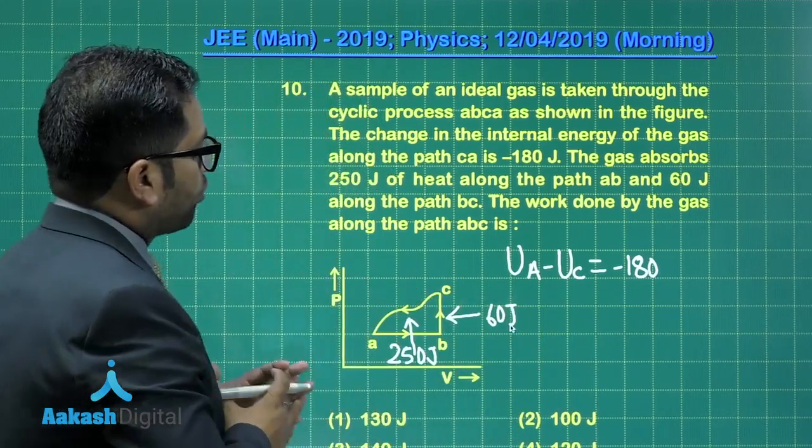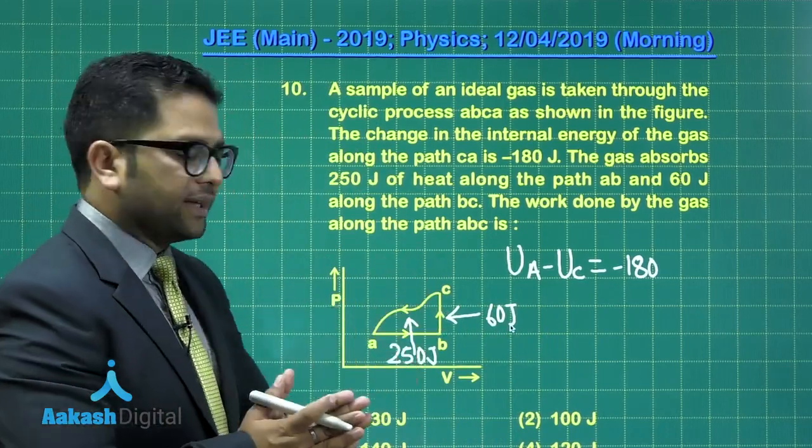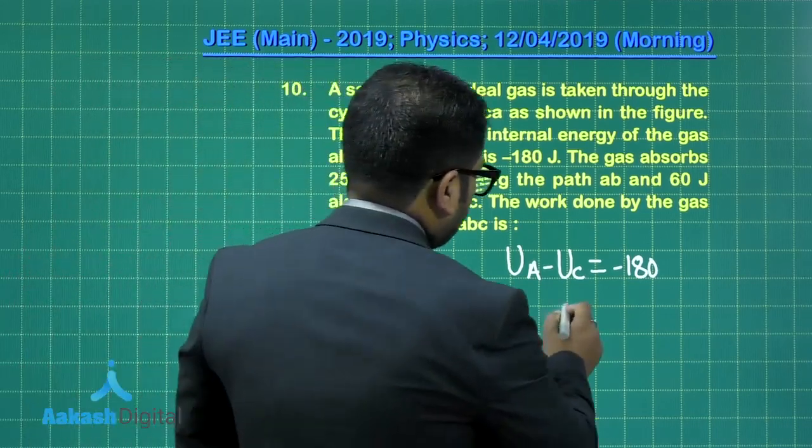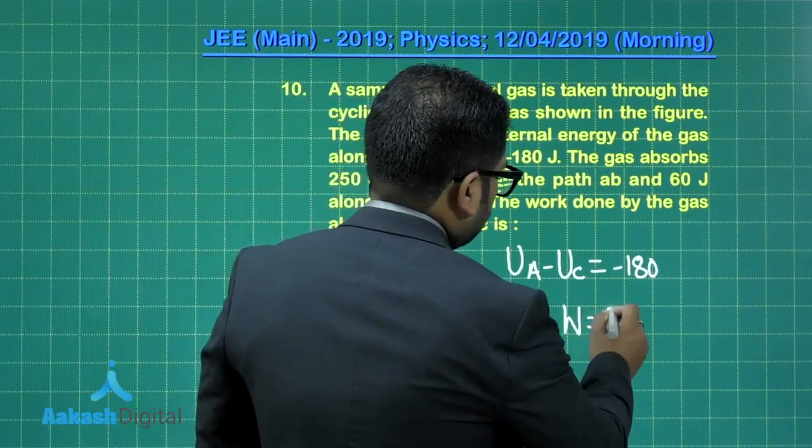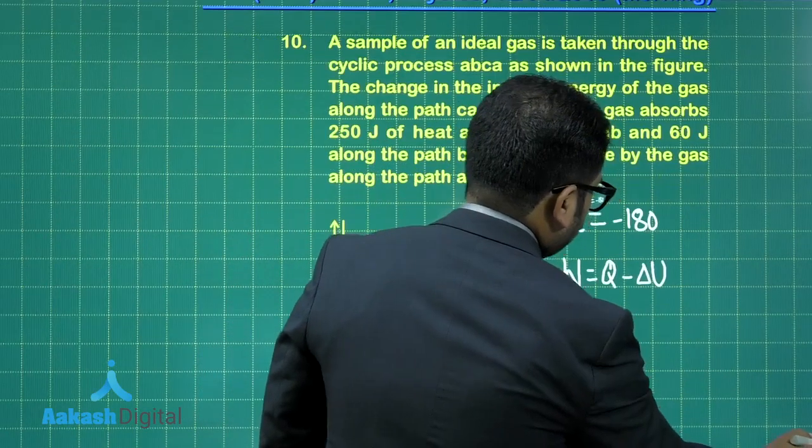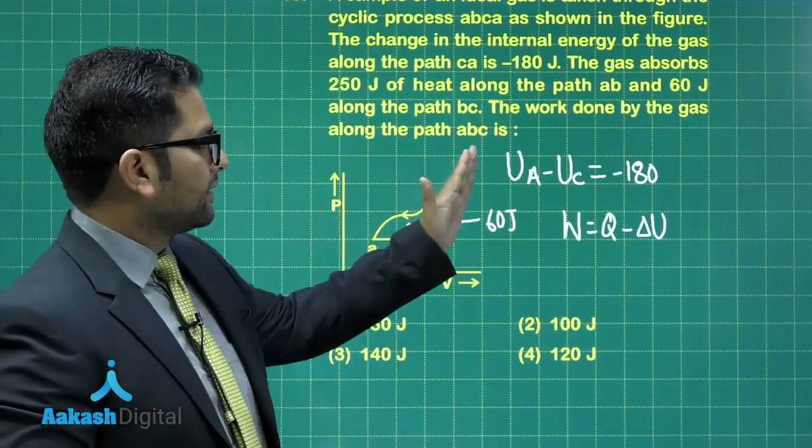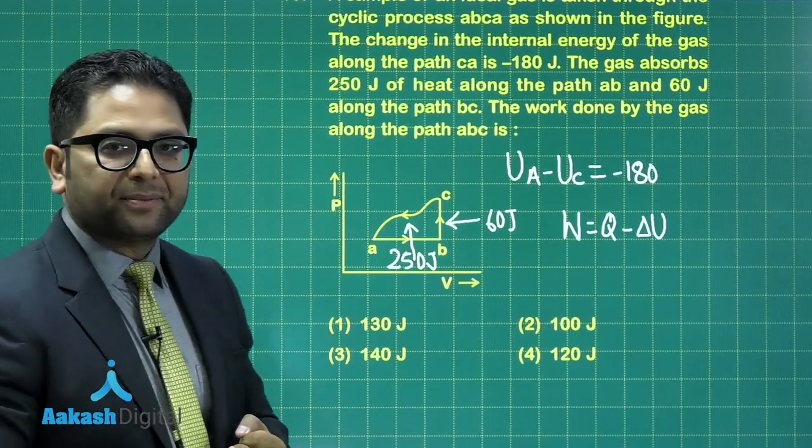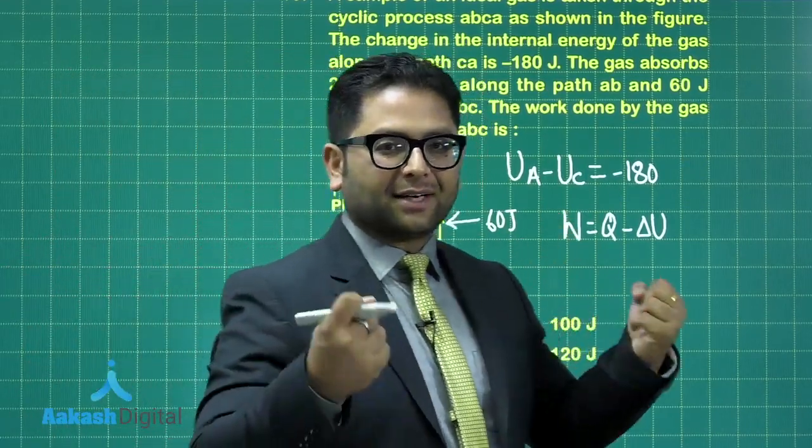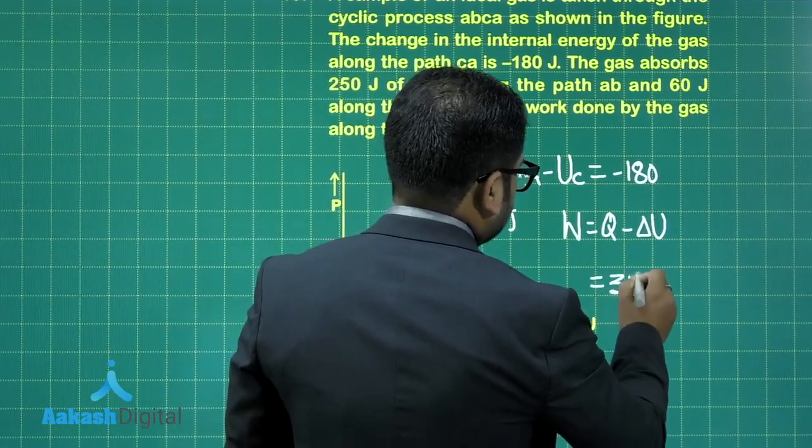We need to calculate the work done by the gas along the path ABC, along these two straight lines. If I want to calculate the work done, I know work done equals Q minus delta U. That's first law of thermodynamics. We need to calculate the work done along this path, and the heat has been given. The heat absorbed is written positive, so this would be 310.